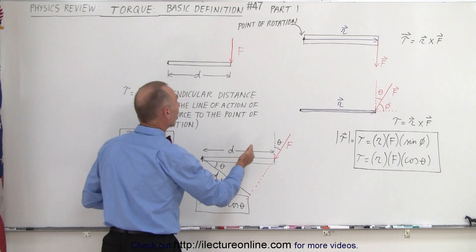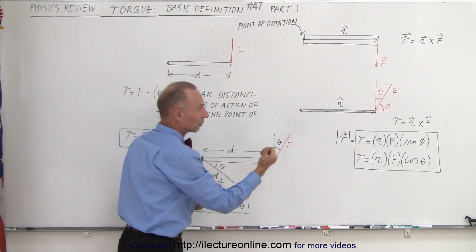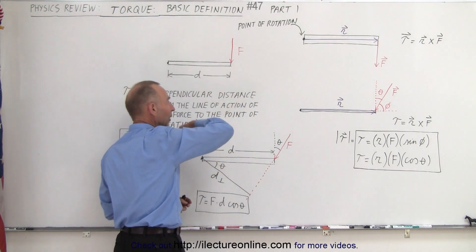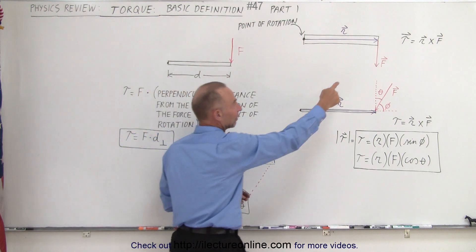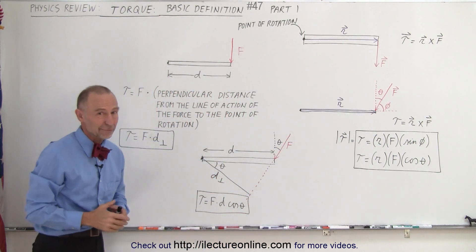If the torque acts counterclockwise, it's a positive torque, meaning the torque comes out of the board. If the torque goes clockwise, that's a negative torque, and the torque is into the board. That's what the positive and negative signs mean.